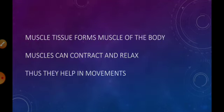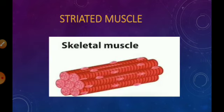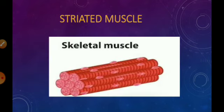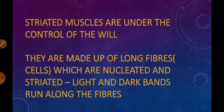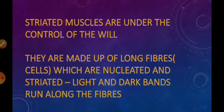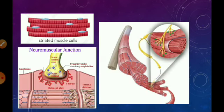Striated muscles have many nuclei and bands in them. These are voluntary actions performed by striated muscles and they are under our control. They are made up of elongated cells having light and dark bands, and these muscles move only when we want them to. Here are pictures of a neuromuscular junction and striated muscle cells.